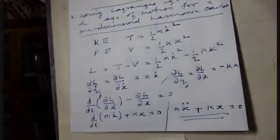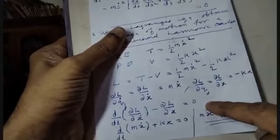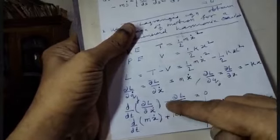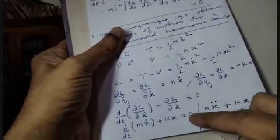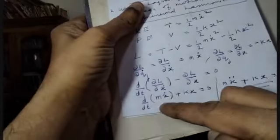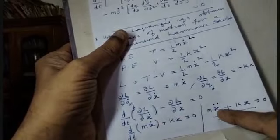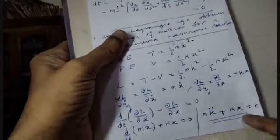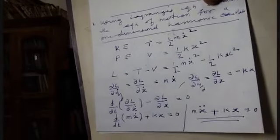Applying Lagrange's equation, d/dt(∂L/∂x-dot) minus ∂L/∂x equals 0. That is, d/dt(mx-dot) minus (minus kx) equals 0, giving m x-double-dot plus kx equals 0, or m d²x/dt² plus kx equals 0. This is the standard equation of motion for a simple harmonic oscillator.